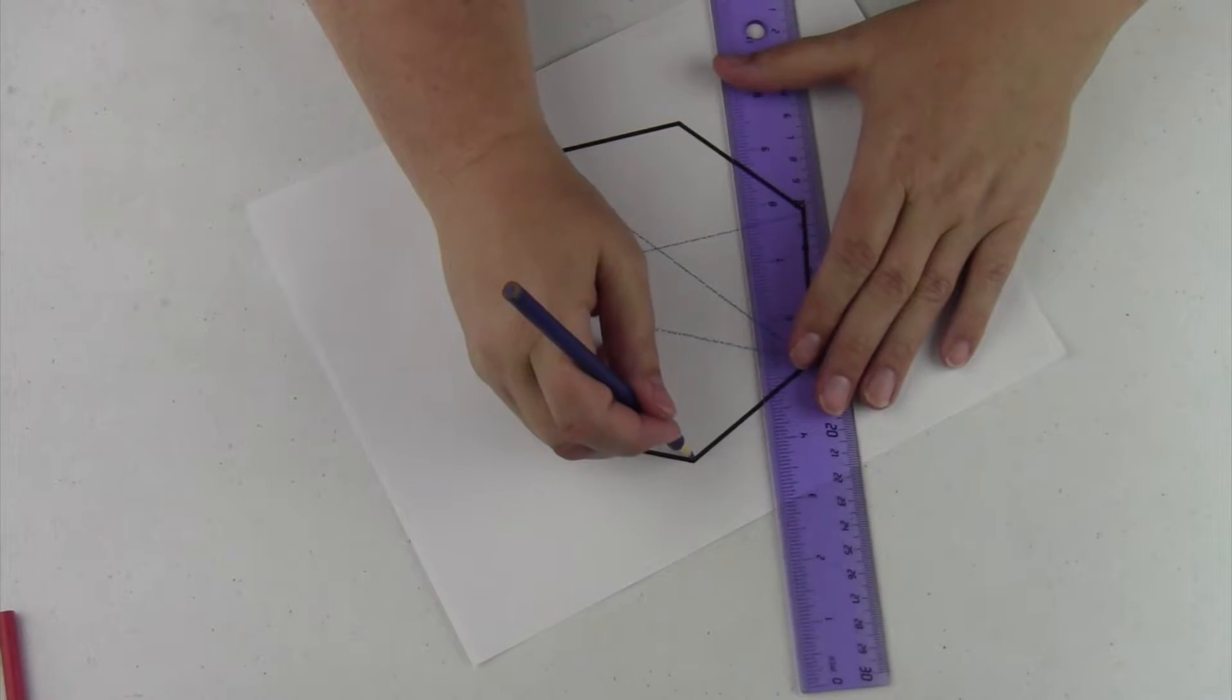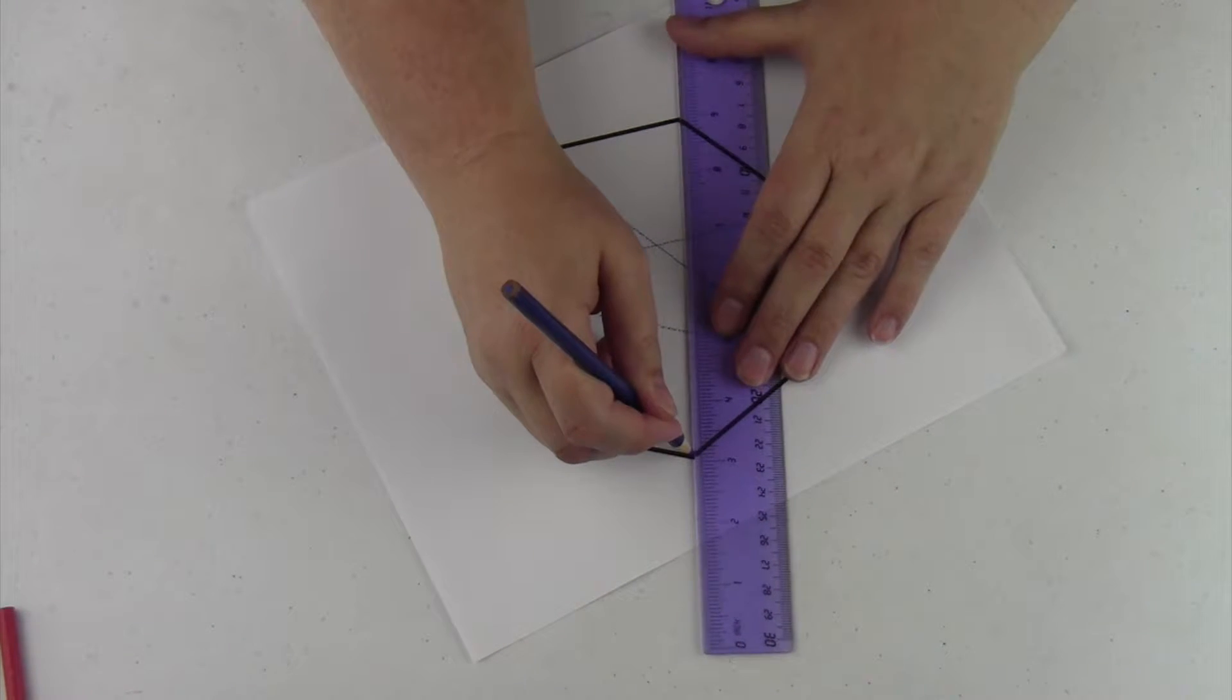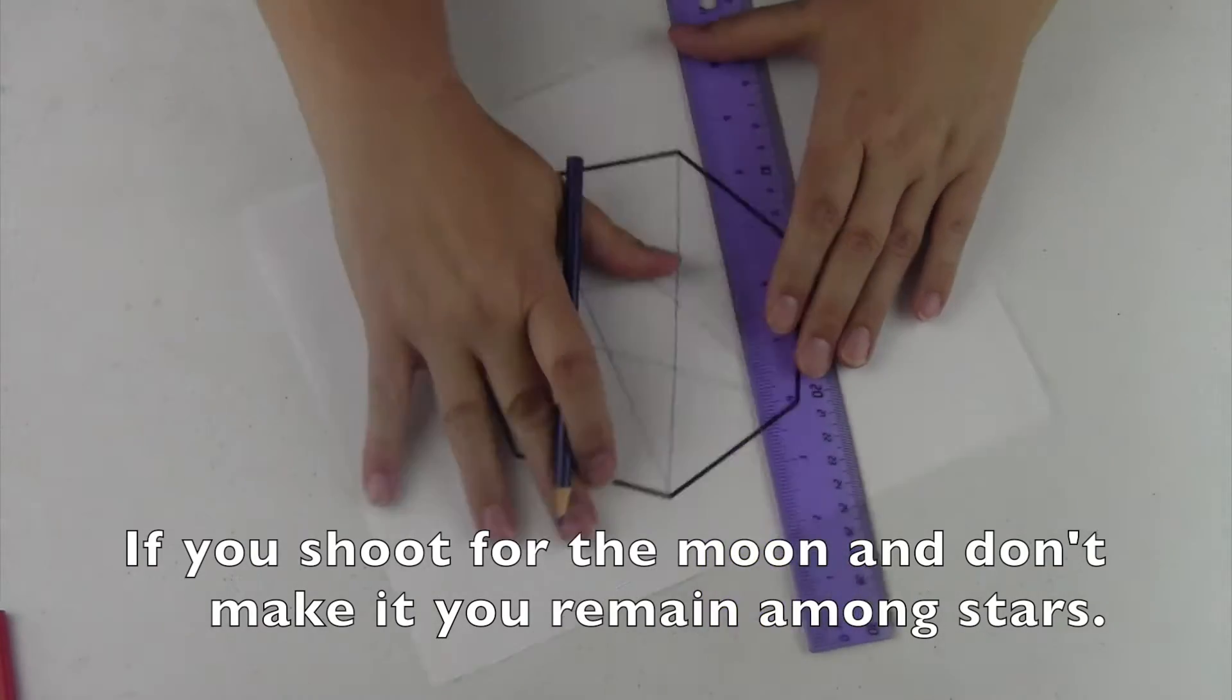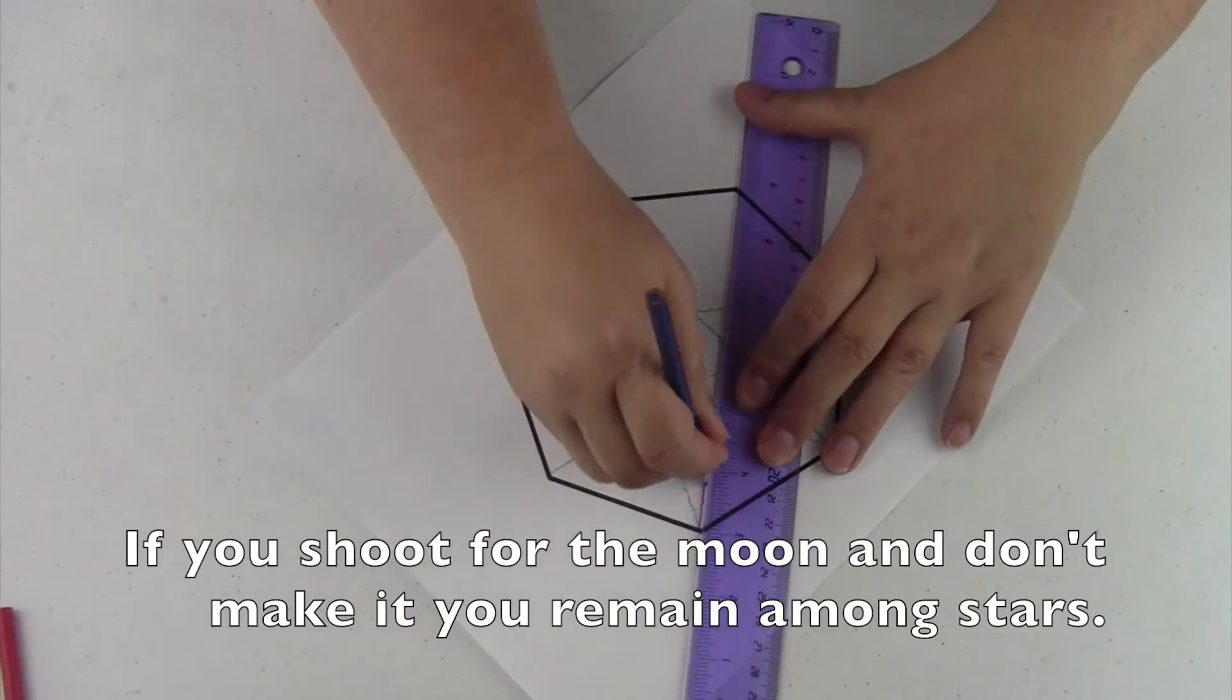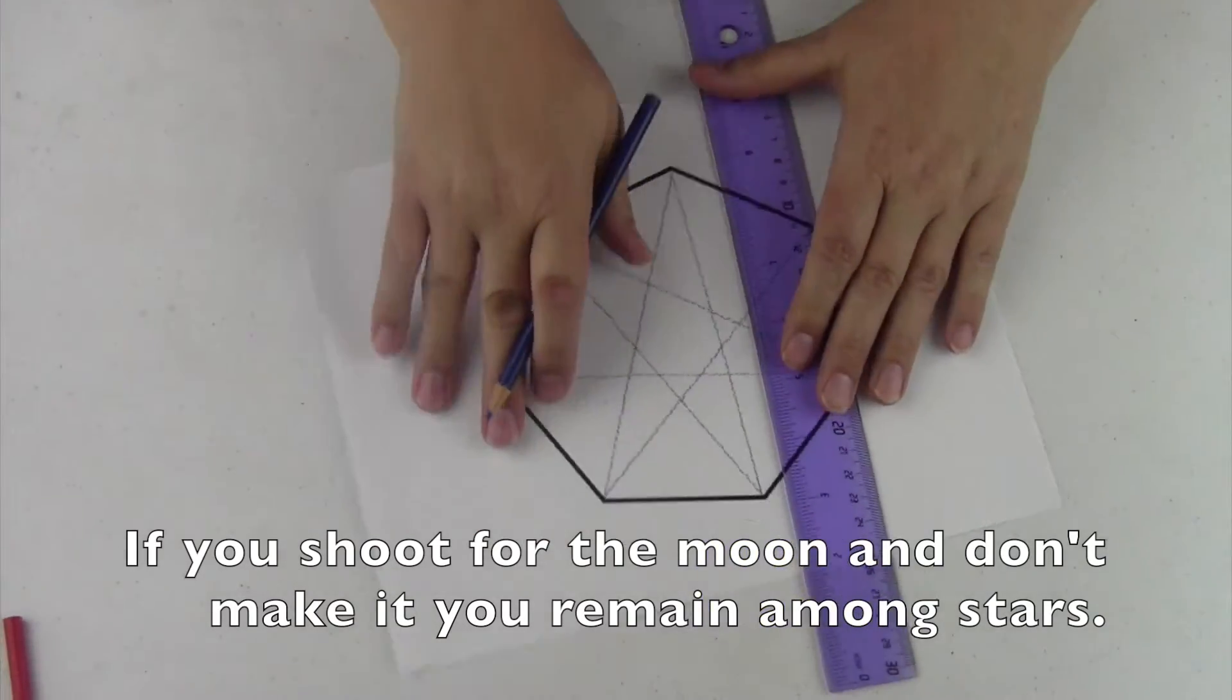We just continue going on until they create a beautiful star. And as the star is being created, you'll see that there will be a heptagon in the middle.